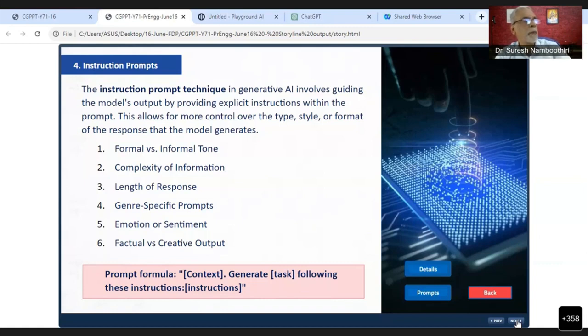It involves guiding ChatGPT's output by providing explicit instructions within the prompt. This allows for more control over the type, style, or format of the response the model generates. This is the most straightforward prompt, and most of the time, like Google search, people use this type of instruction prompt.